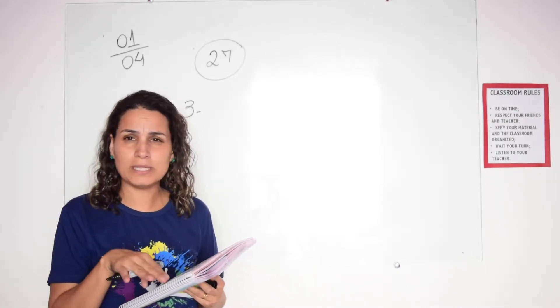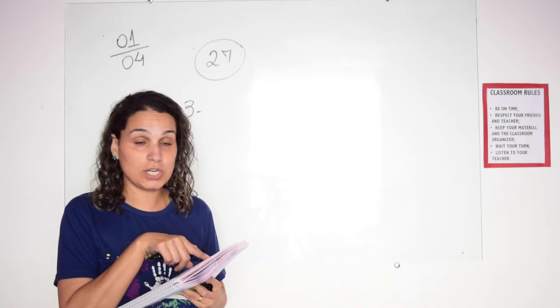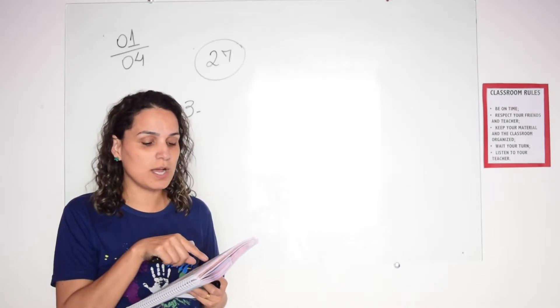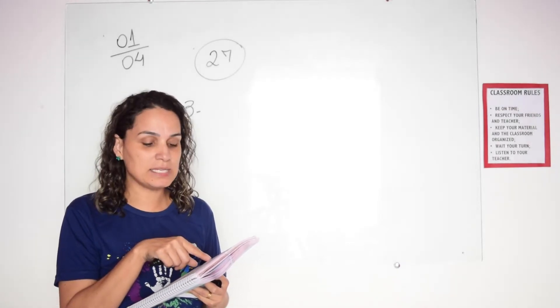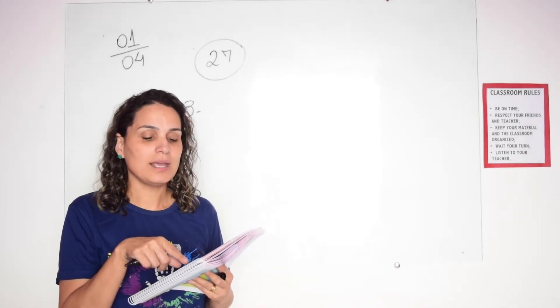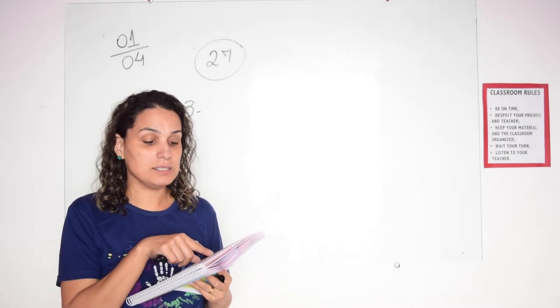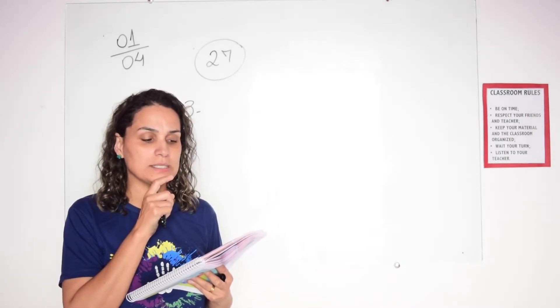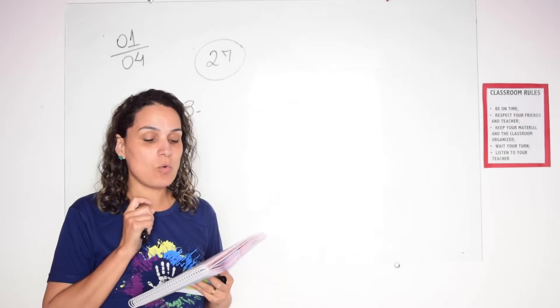Eles estão comendo essas comidas que estão aqui: chicken, que é a primeira figura, rice and beans, meat or steak, and salad. Eles estão comendo essas comidas. E o que é para vocês fazerem com essas figuras?